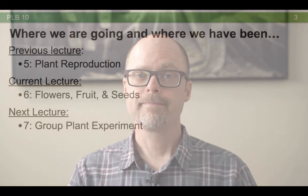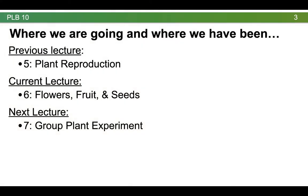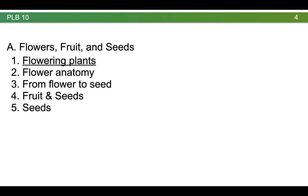Let's get started. In this lecture we're going to extend our knowledge of plant reproduction by talking about flowers, fruit, and seeds. The next lecture is going to be devoted to our group plant experiment. As we start talking about flowers, fruit, and seeds, it's important to keep in mind that we're going to have a specific focus on flowering plants. But gymnosperms do not make flowers and still produce seeds. So seed plants include angiosperms and gymnosperms, but in this lecture we're going to be largely focused on the angiosperms or flowering plants.